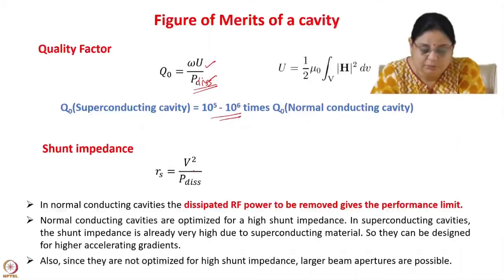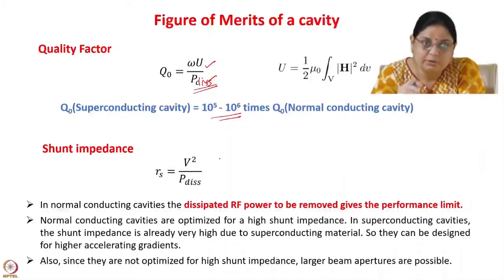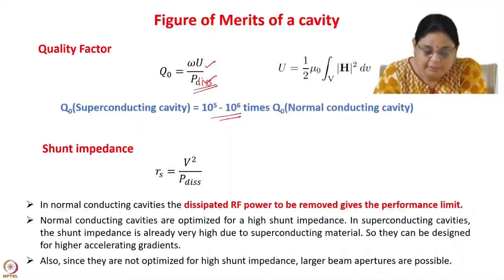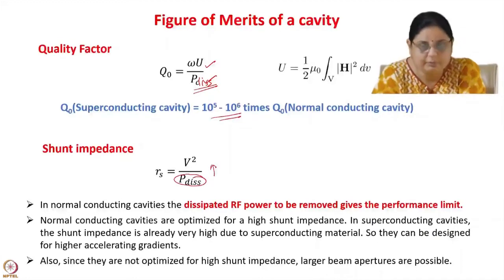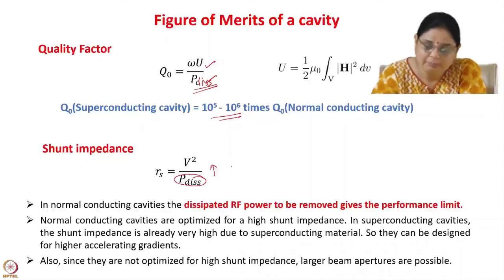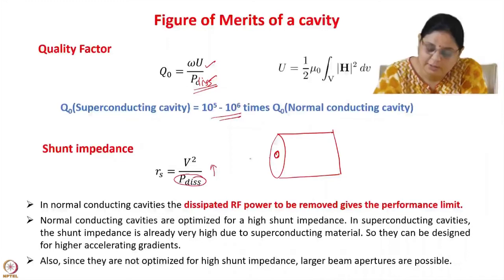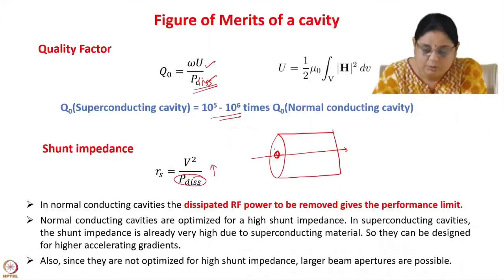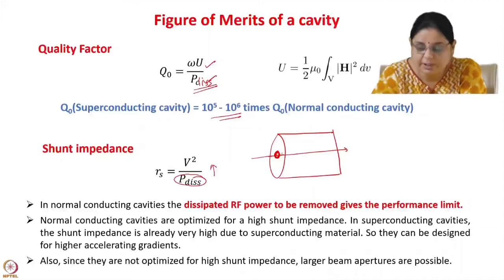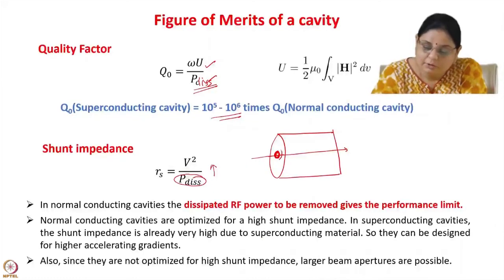The shunt impedance is given by the axial voltage divided by the power dissipation. In normal conducting cavities, the geometry is optimized for high shunt impedance. In superconducting cavities, since power dissipated is so small, the shunt impedance is already very high, so you need not optimize for it. Instead, one of the parameters optimized is the iris or beam aperture. Larger beam aperture means smaller shunt impedance, so in normal conducting cavities the beam aperture is kept very small to maximize shunt impedance. In superconducting cavities, since shunt impedance is already very high, you can increase the size of the beam aperture, which helps reduce beam loss.